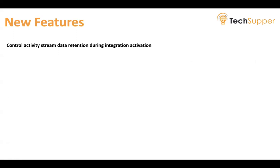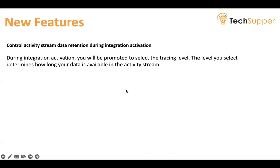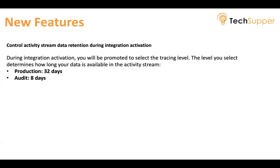Control activity stream data retention during integration activation. In Gen 2, there was one data retention option under settings to control how much data you wanted to retain or purge. This has been removed in Gen 3. Now, when you activate your integration, you will be prompted to select a tracing level that determines how much data will be retained for that particular integration. There are three levels. Production logs data for 32 days. Audit retains data for eight days but has more logs. When you choose Audit, it logs the same data as Production along with wire payloads of triggers and invokes.